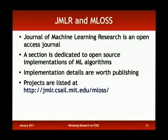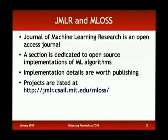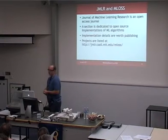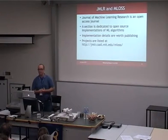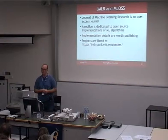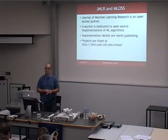There's a journal called the Journal of Machine Learning Research, which split off from the Springer journal Machine Learning. It's an open access journal, and I've seen it cited as one of the top ten journals in computer science for impact. They think releasing implementations of machine learning algorithms is important enough that you can get a paper in their journal just on an implementation. That goes along with the Machine Learning Open Source Software project, which is all listed at a website at MIT.